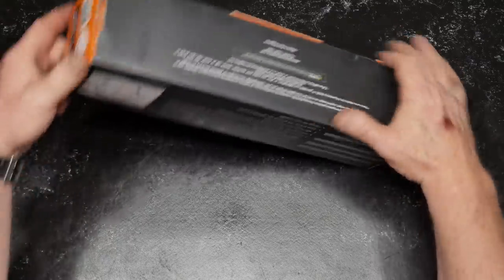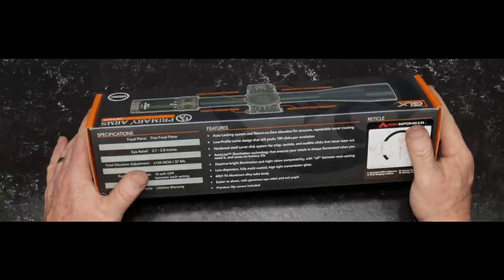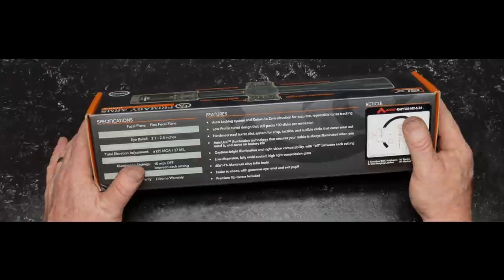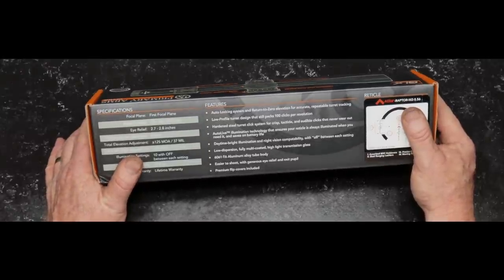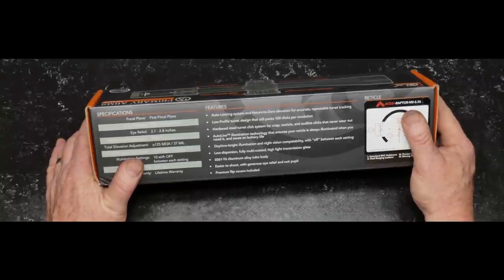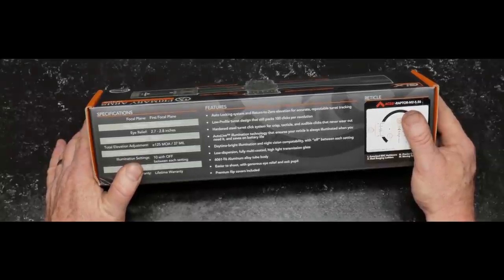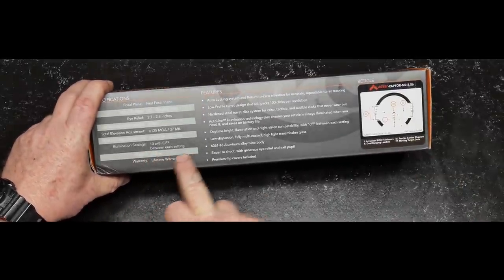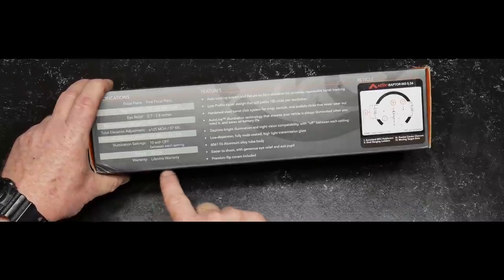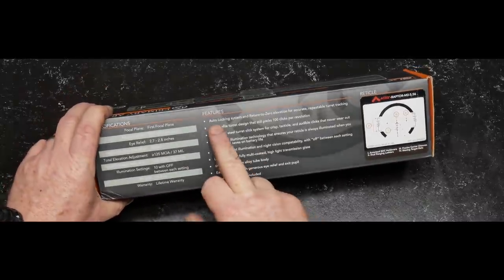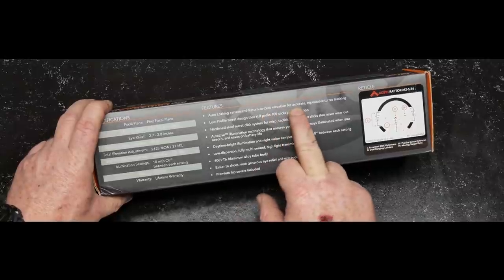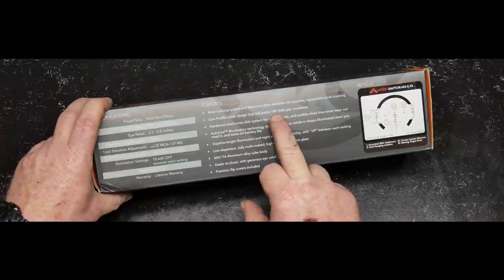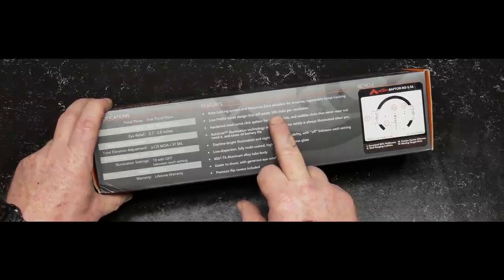Let's go over some of the details on the box. First focal plane, 2.5 to 10 power. Eye relief is 2.7 to 2.8. The objective lens is 44 millimeter. Total elevation adjustment is 125 MOA or 37 mils. Total windage adjustment is 80 MOA or 23.7 mils.